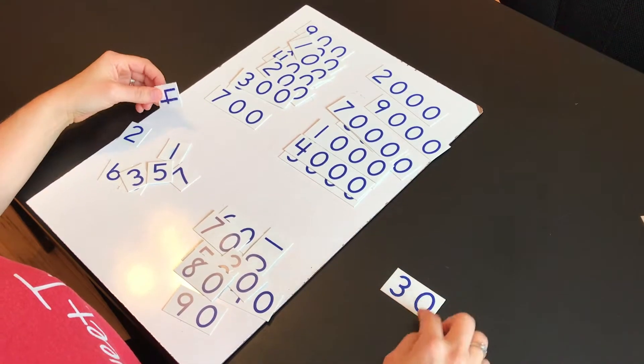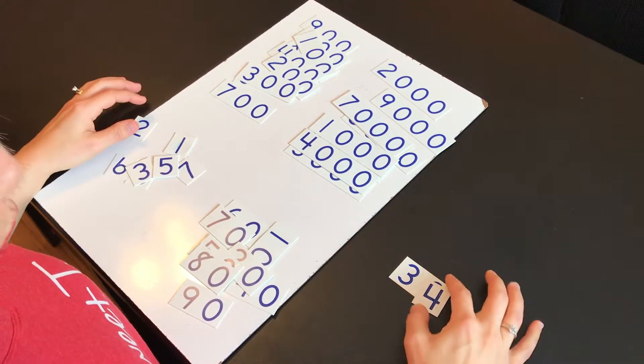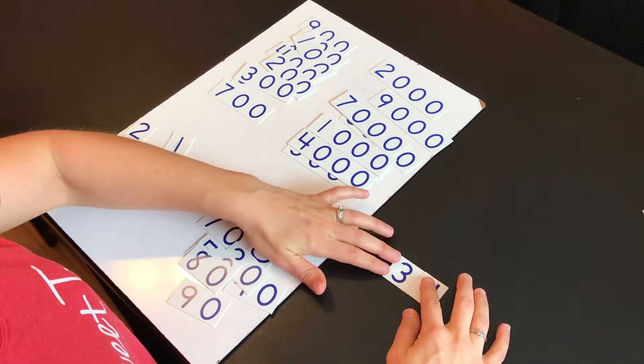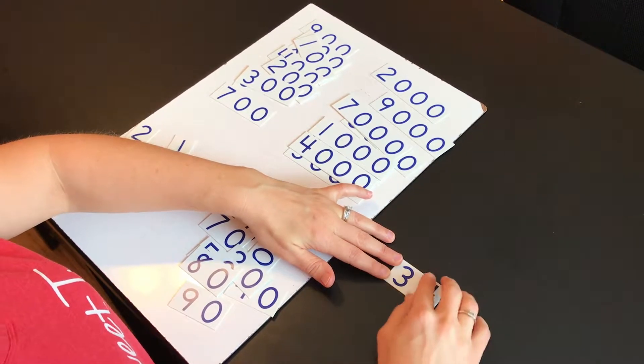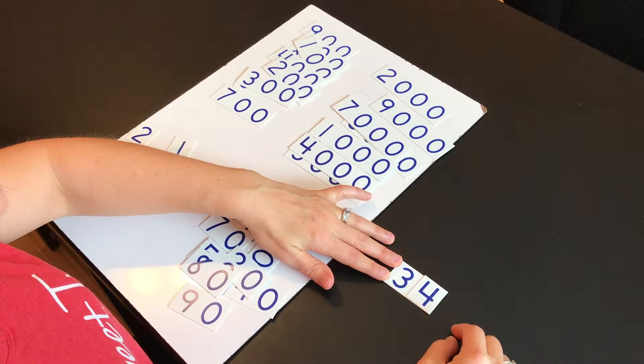So even if your child wants to do 34, it's easy for them to see the 30, the tens takes up two digits, and the ones you just add on to the end.